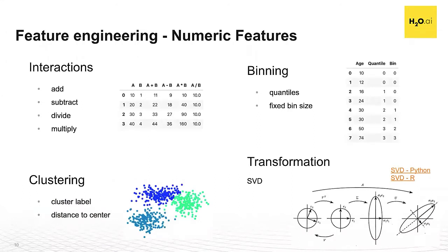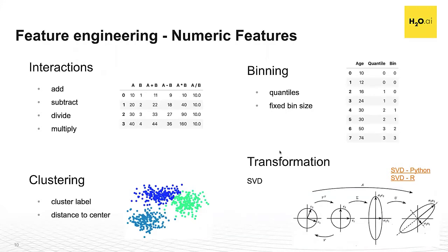Let's move on to feature engineering for numeric features. We can use interactions — things like adding, subtracting, multiplying, or dividing two columns to create new predictors. We can use binning using quantiles where each bin has the same population size, or a histogram where all bins have the same size. We can use a clustering technique like k-means to create new features, and also singular value decomposition (SVD) to perform dimensionality reduction. I encourage you to go back to Session 1 of Module 2 to hear Mario's talk more about numeric feature transformations.